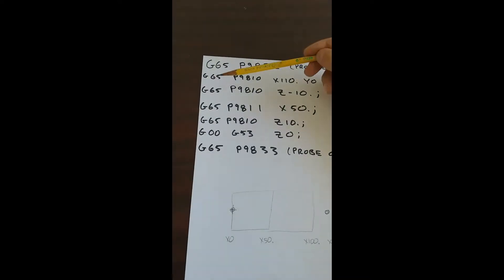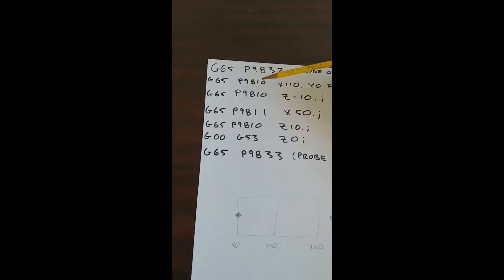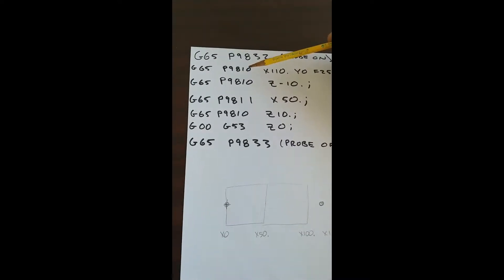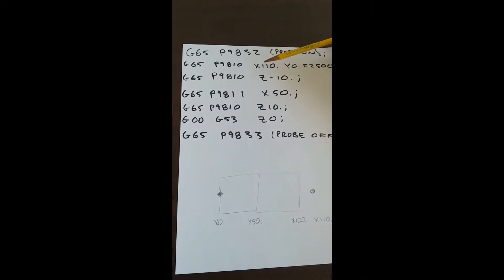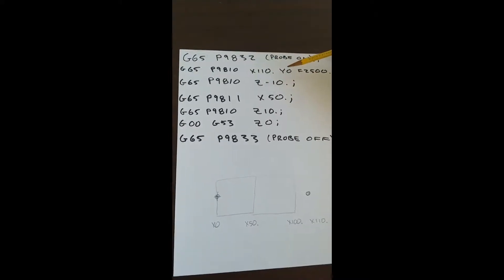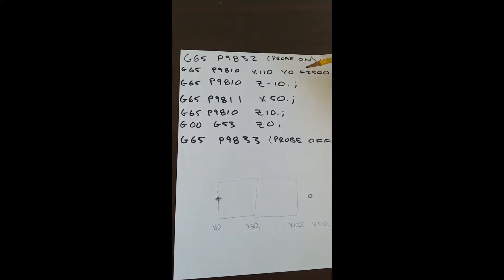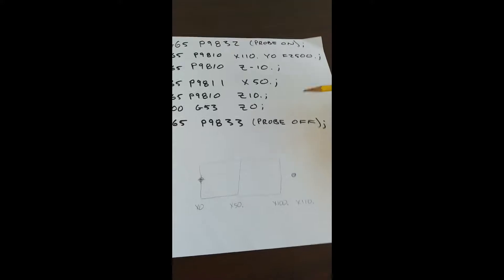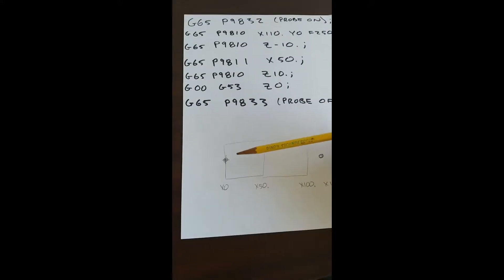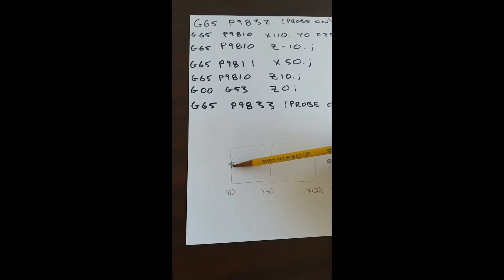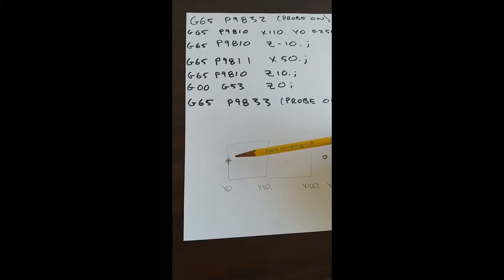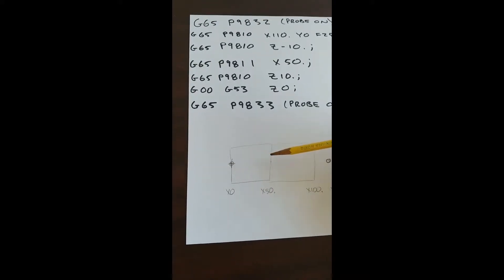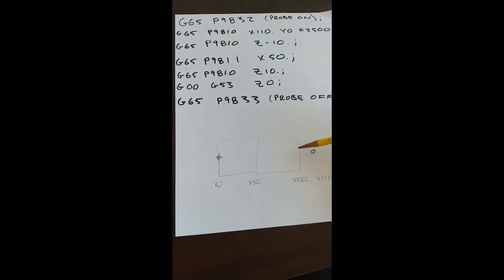Then I'm going to do G65-P9810, which is the positioning move for the probe. I'm going to command it to go to X110, Y0 at a feed rate of 2.5 meters a minute. So you can see here, my X0 is set to the vise stop and the two options I have for my stock length are 50 millimeters or 100 millimeters.